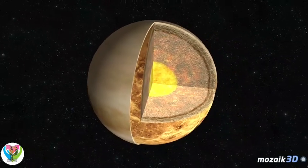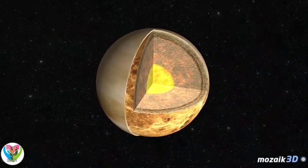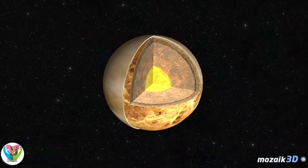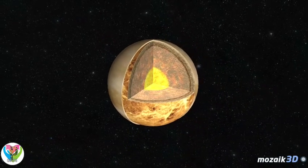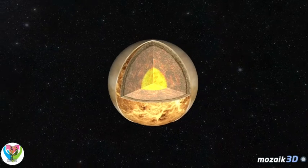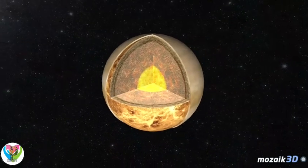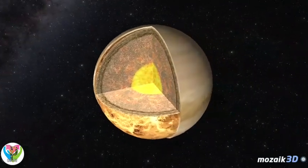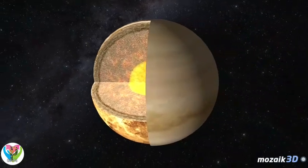Of all the terrestrial planets, Venus has the densest atmosphere, composed mainly of carbon dioxide with some sulfur, which indicates volcanic activity. Atmospheric pressure is 90 times that of the Earth.